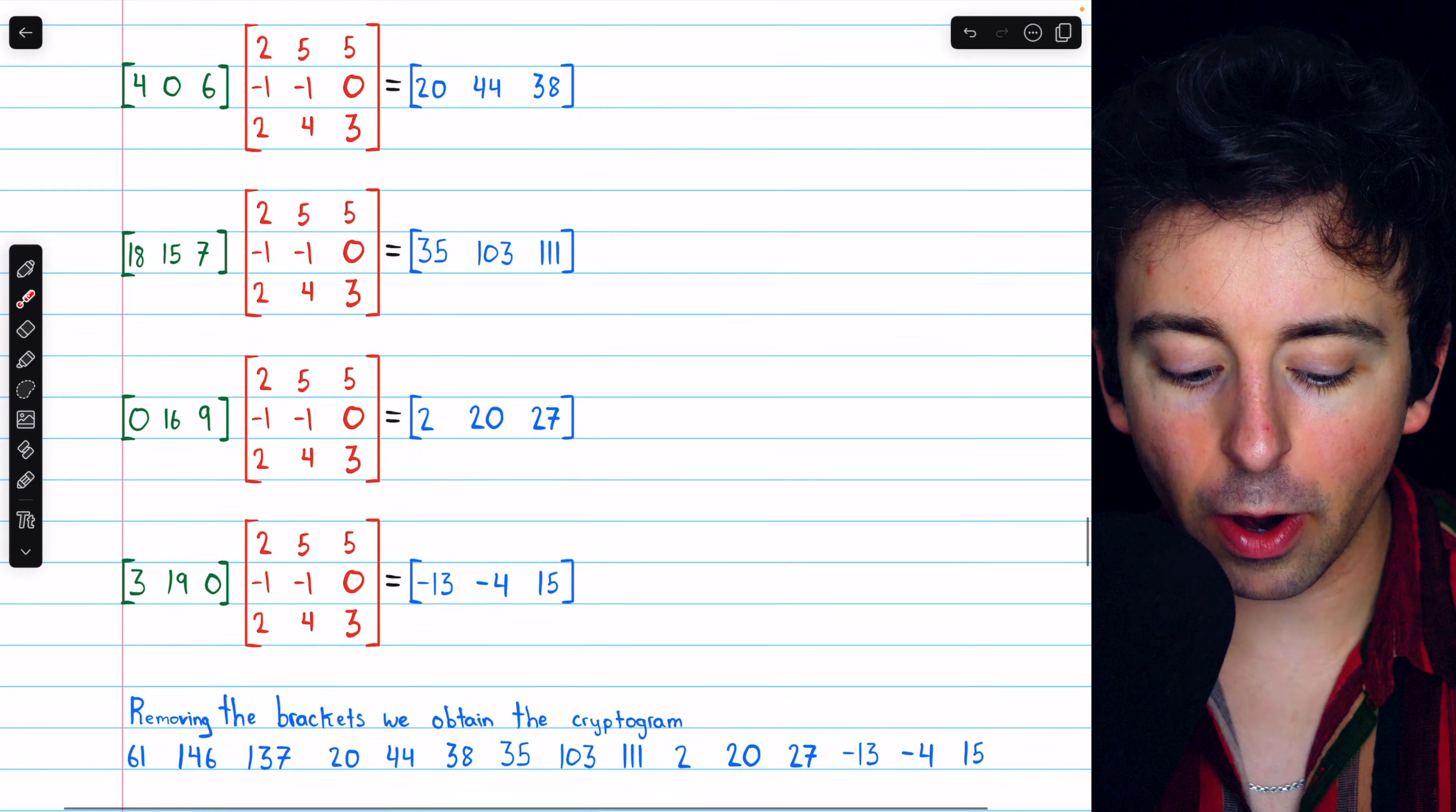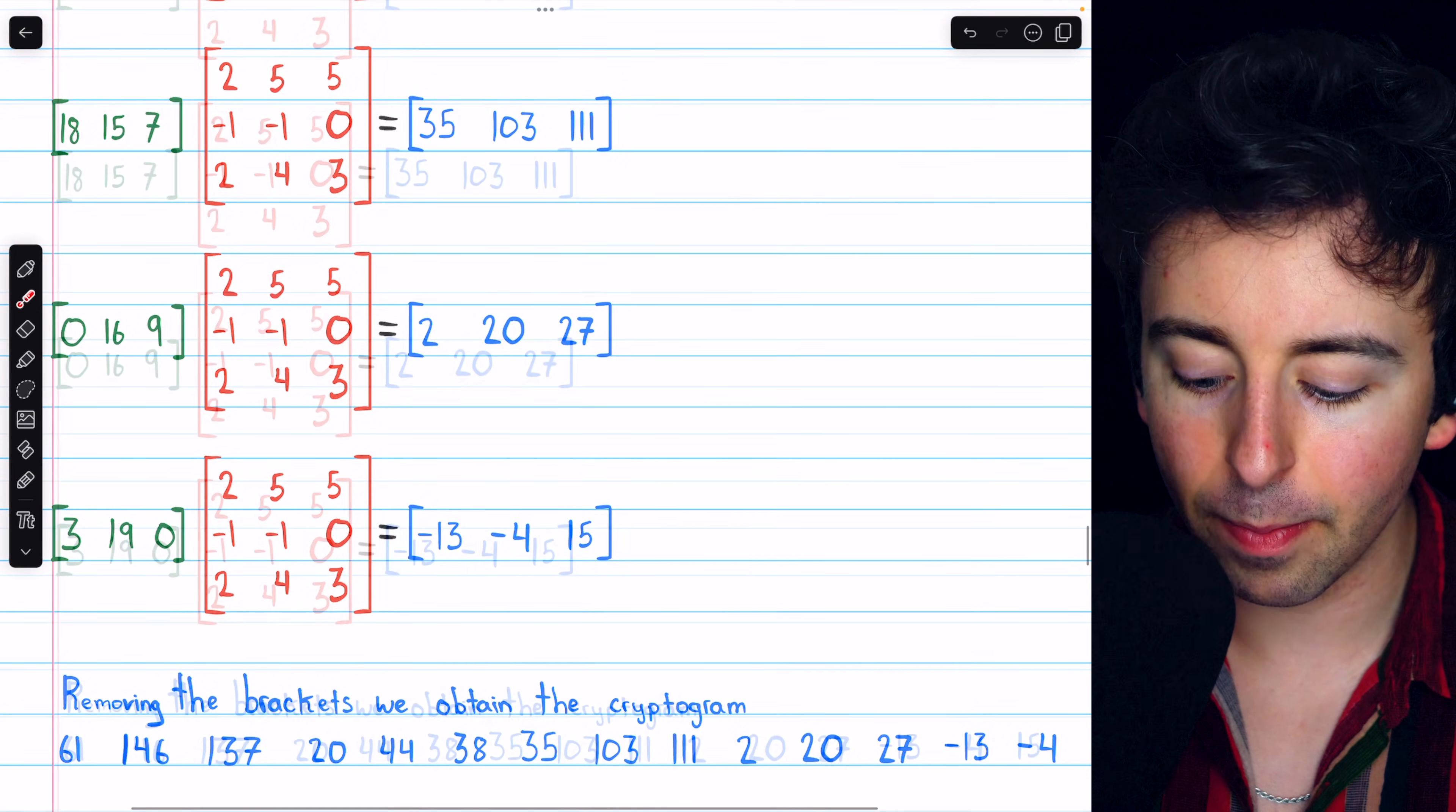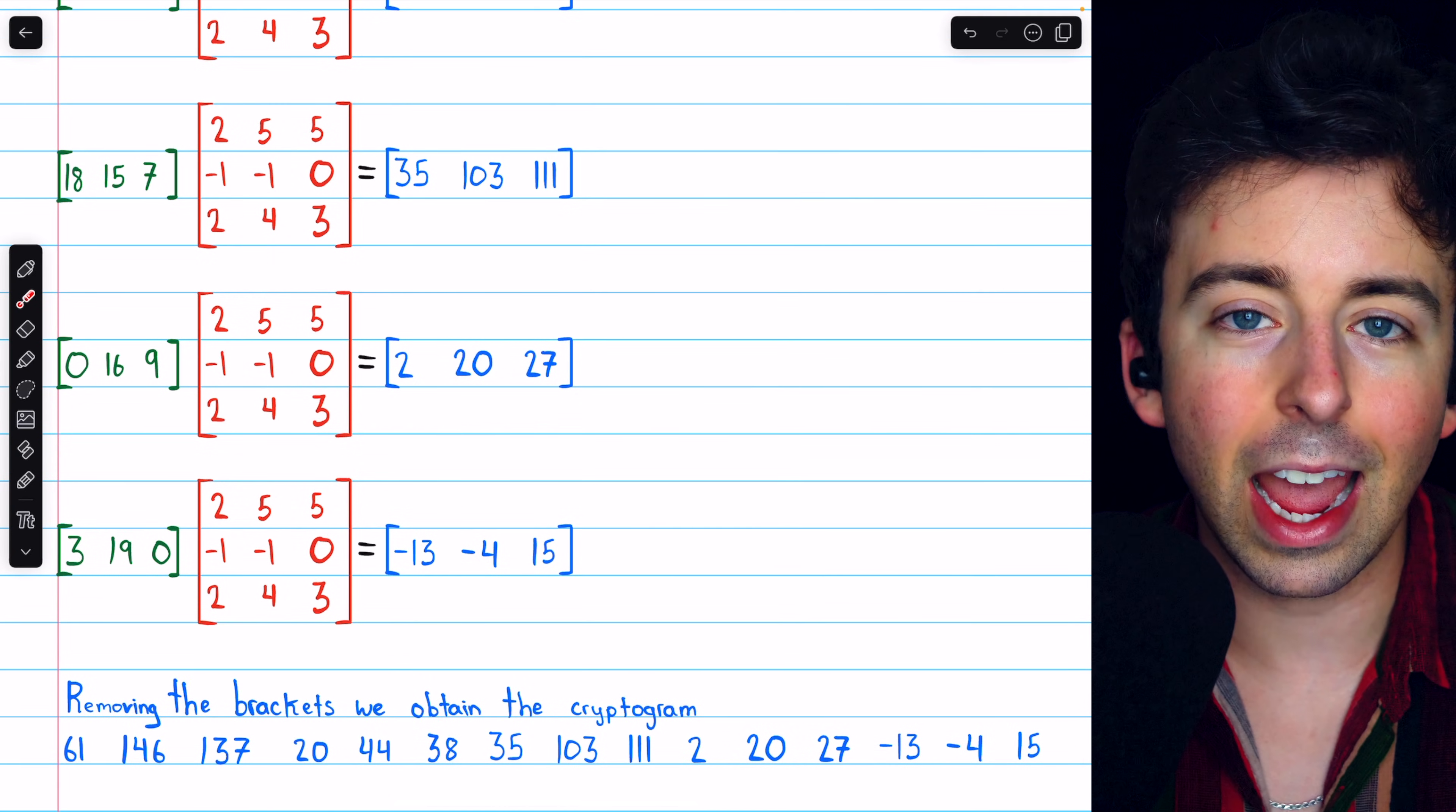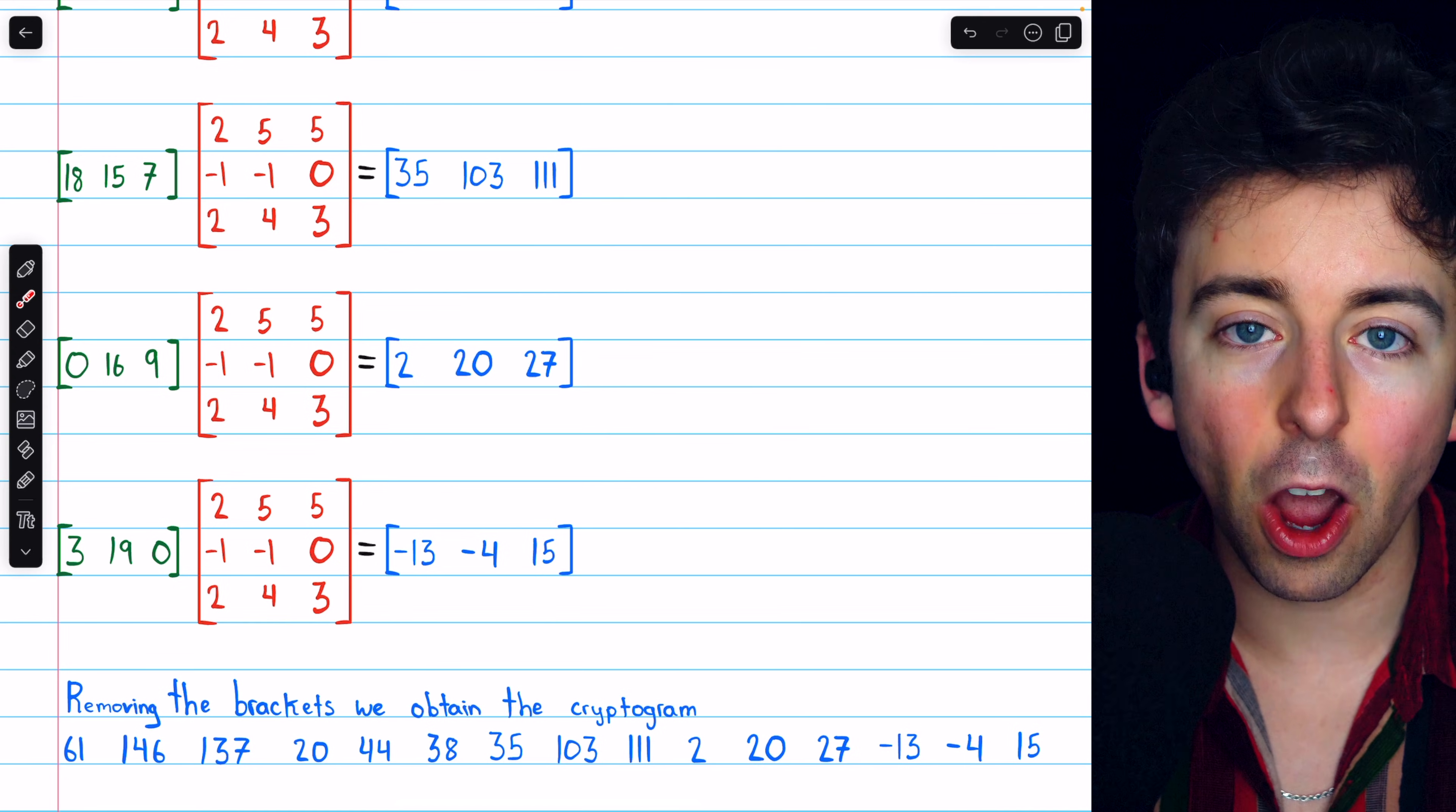So we encode each row, and then we can remove the brackets to obtain our cryptogram. This sequence of numbers is now indecipherable to anyone who doesn't know where they came from, but if we send it to somebody who has the encoding matrix, they could decode this cryptogram by using the inverse.